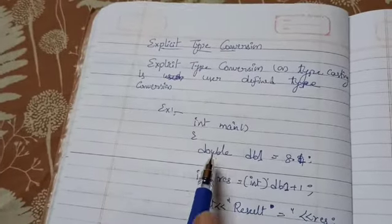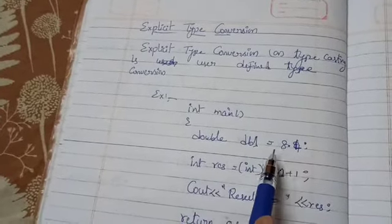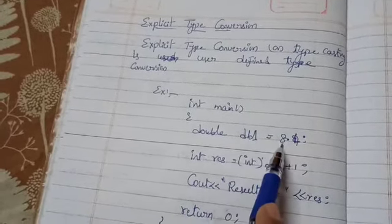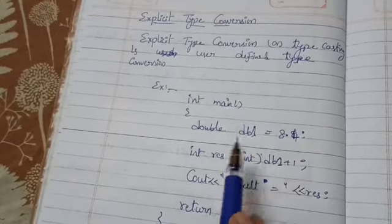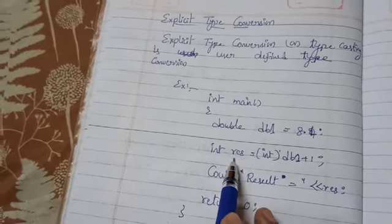Int main, double is the data type. DB1 is equal to 8.4. What is the value of DB1? 8.4. Fractional values I give. Integer is the variable, RES is the variable.